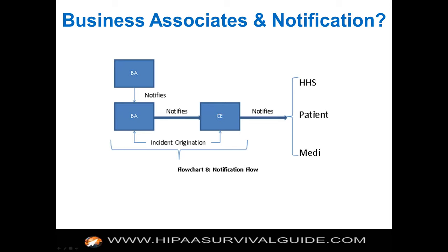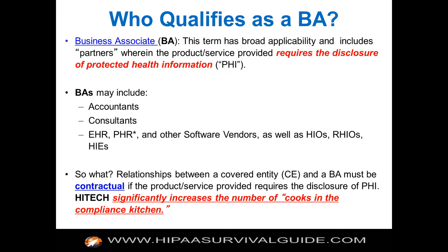If you meet the definition of performing a business function on behalf of a covered entity where, on a regular basis, you have to look at PHI to do that business function, then you're a BA. EHR vendors, PHR vendors, personal health records hooked to an EHR, other software vendors, HIOs, regional HIOs — all these are examples of business associates.